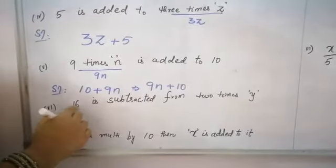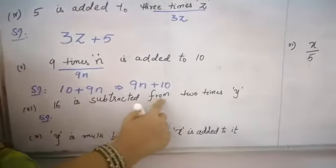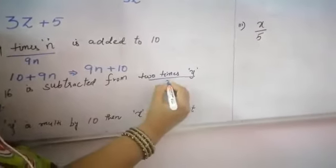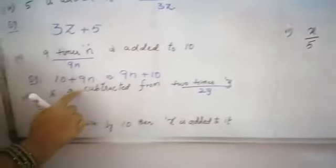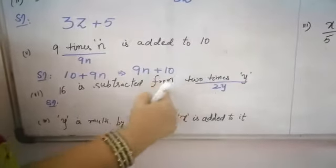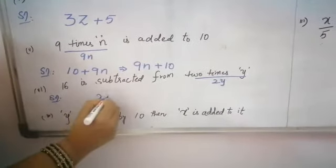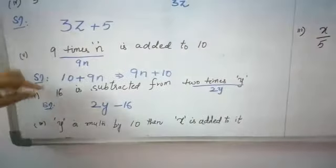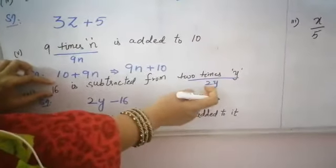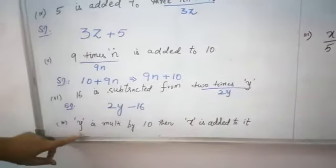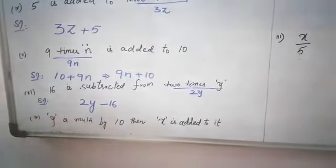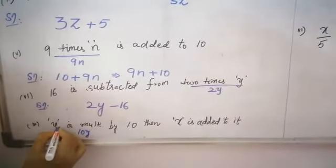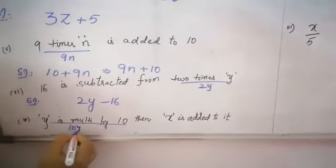16 is subtracted from 2 times Y. First write 2 times Y, that is 2Y. Since 16 is subtracted from 2Y, you write minus 16. So the expression is 2Y minus 16.